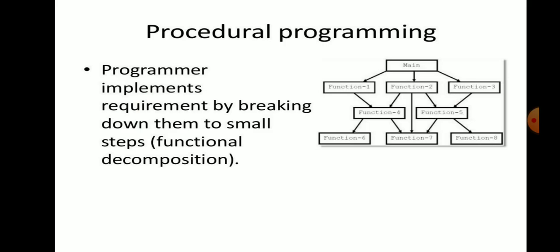In procedural programming, the programmer implements requirements by breaking them down into small steps — that is, functions and decomposition. The problem with procedural programming is that it follows the top-down approach, meaning the program is viewed as a series of sequential steps. A program is divided into various procedures or functions which operate on data. The issue is that when a program grows larger, code redundancy, maintainability, and complexity increase. Both procedural and object-oriented are imperative programming paradigms.